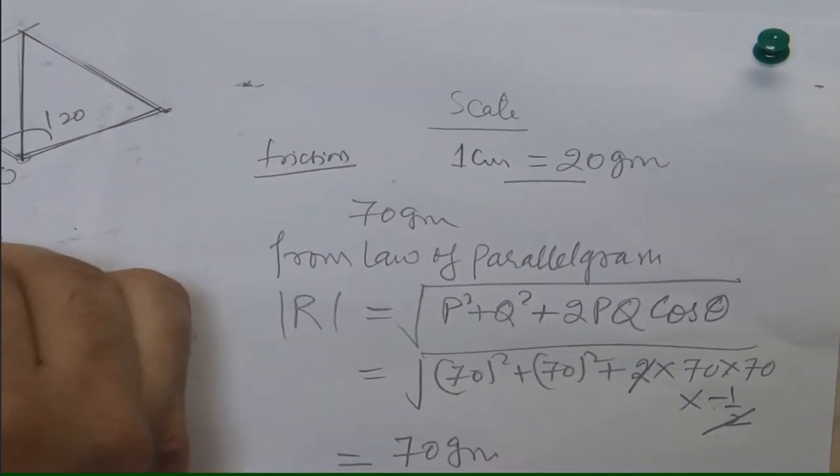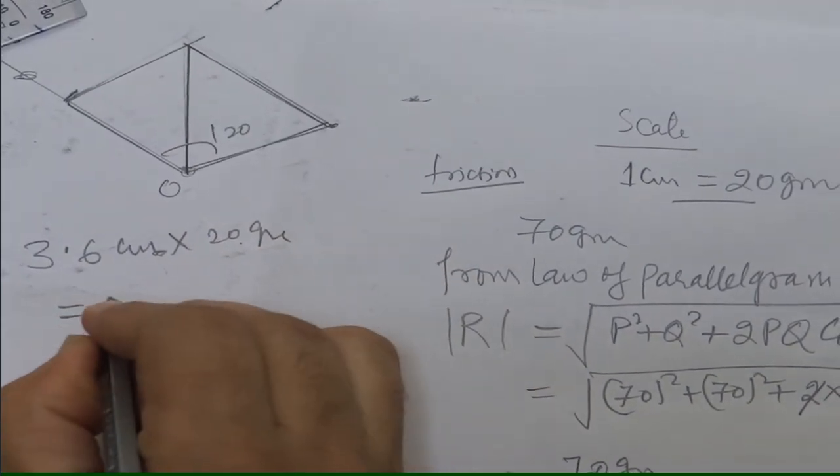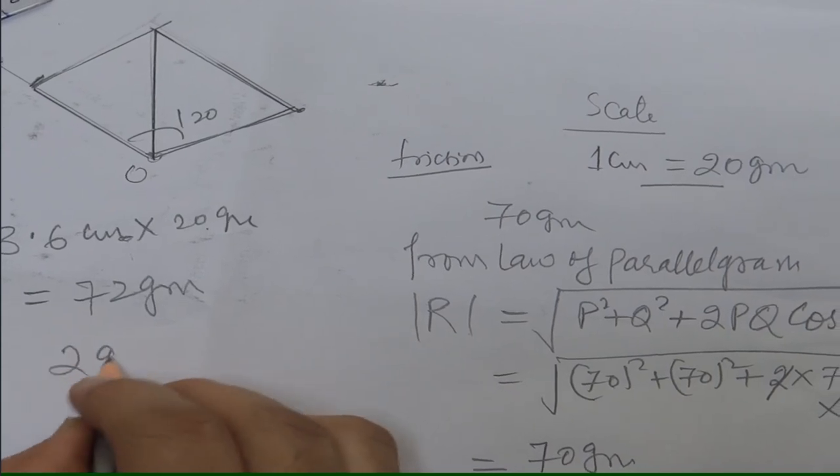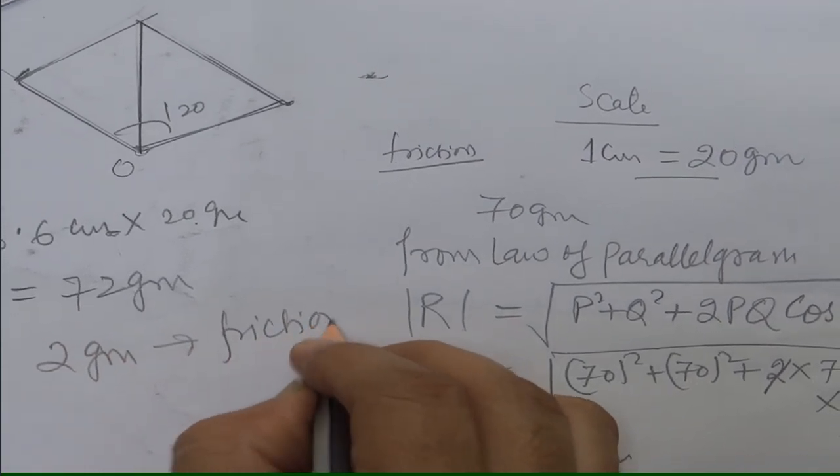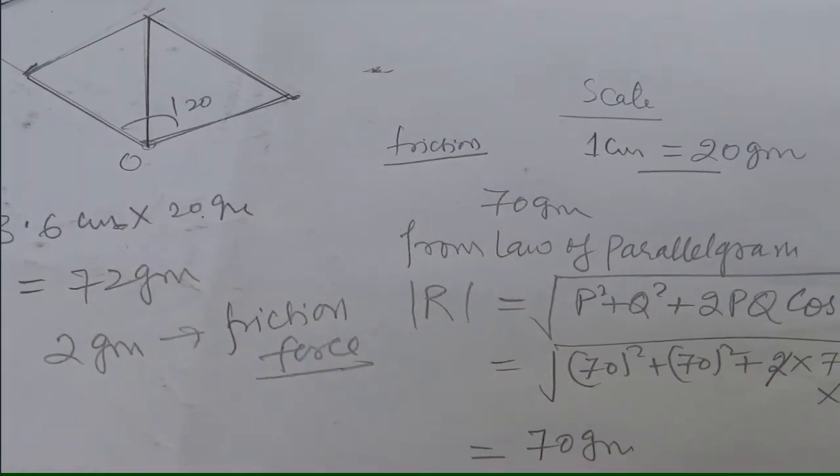So when you measure, it is 3.6 centimeter into 20 grams, that comes out 72 grams. So there is an error of measurement of 2 grams because of the frictional force.